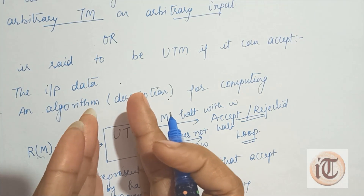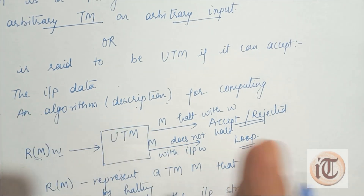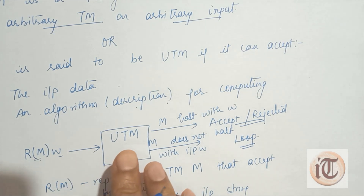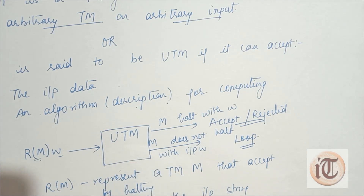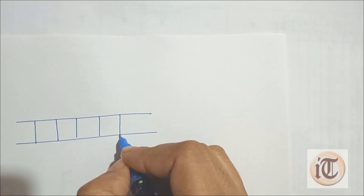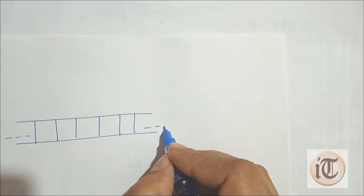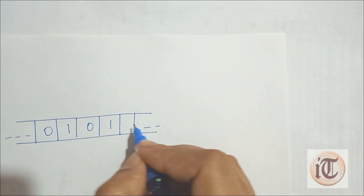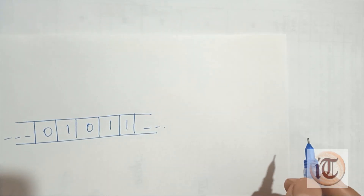So a computer which is running other computer programs is called a Universal Turing Machine. For example, suppose we have an input tape with symbols like 0, 1, 0, 1, 1, and so on.